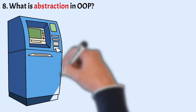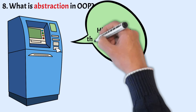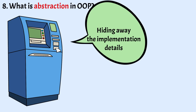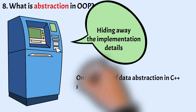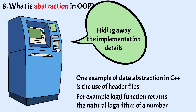Coming to the next question: what is abstraction in OOP? In object oriented programming, data abstraction means displaying only essential information and hiding away the background details. Data abstraction provides an interface to the user while hiding away the implementation details of the program. One example of data abstraction in C++ is the use of header files. For example, the log function that returns the natural logarithm of a number is present in the header file called cmath. In the program, we don't have to know the algorithm of calculating the logarithm — we simply call the log function with an argument and the logarithm of that argument is returned. Thus the details of implementation are hidden.